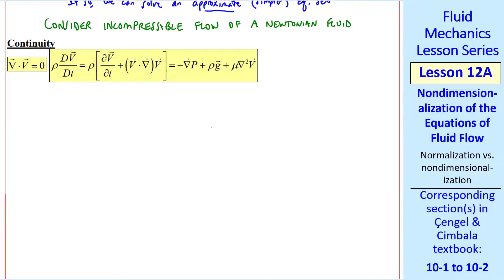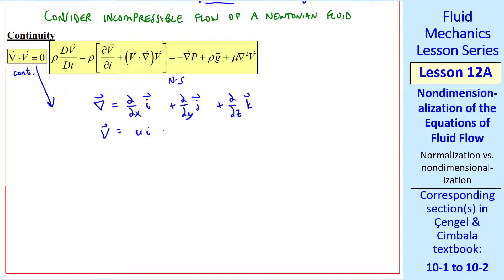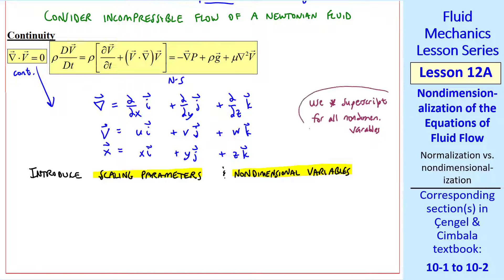Here are the equations of fluid flow: continuity and Navier-Stokes. Let's consider continuity first. In Cartesian coordinates, the gradient vector is del/del-x i plus del/del-y j plus del/del-z k, and the velocity vector is u i plus v j plus w k. The vector coordinate x is x i plus y j plus z k. To non-dimensionalize, we have to introduce scaling parameters and non-dimensional variables. We'll use an asterisk or star superscript for all non-dimensional variables.